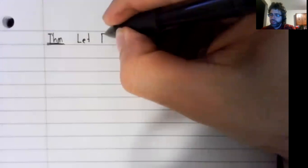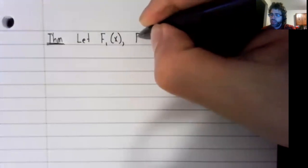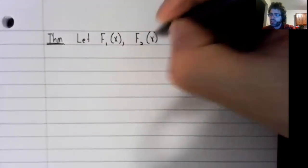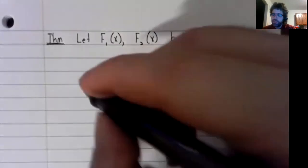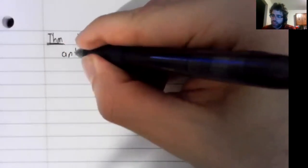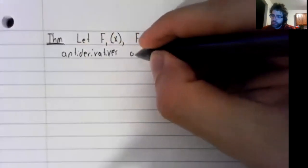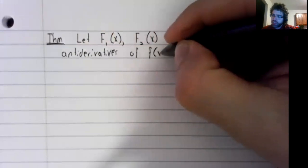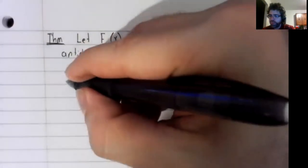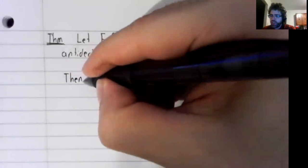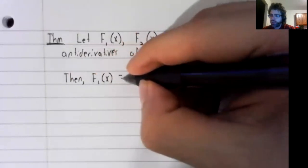Let f sub 1 of x and f sub 2 of x both be antiderivatives of the same function f of x. Then these antiderivatives are very similar to each other.